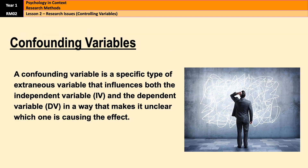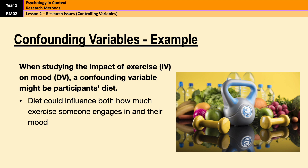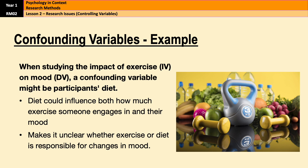Next we have confounding variables. A confounding variable is a very specific type of extraneous variable that influences both the independent variable and the dependent variable in a way that makes it unclear which one is causing the effect on the DV. Unlike extraneous variables, confounding variables do vary systematically with the IV — they are directly linked to the independent variable, and that makes confounding variables different in every experiment because they always depend on what it is you're actually studying. For example, imagine researchers are studying the impact of exercise on mood. A confounding variable might be participants' diet, which could influence both how much exercise somebody engages in and their mood, making it unclear whether exercise or diet is responsible for the changes in mood.